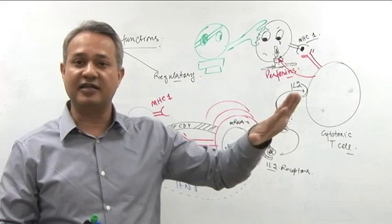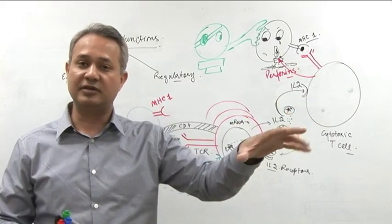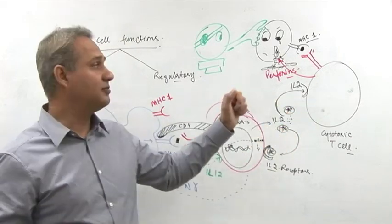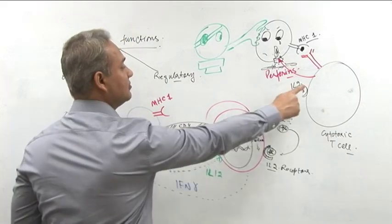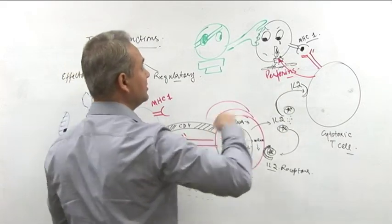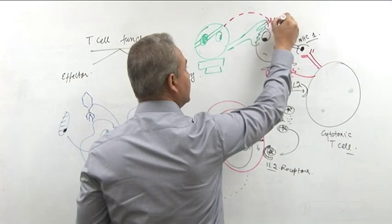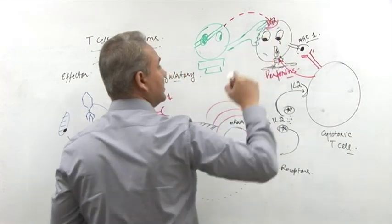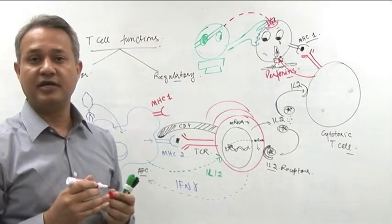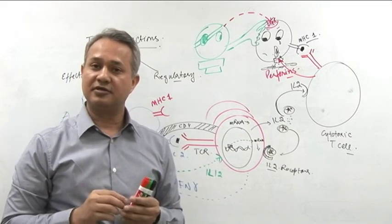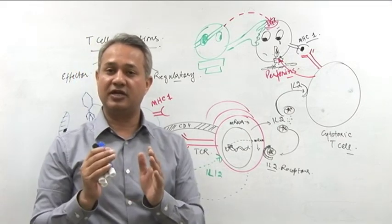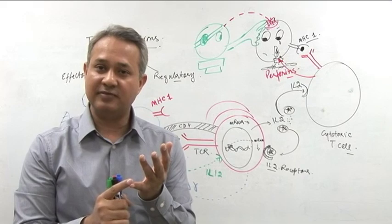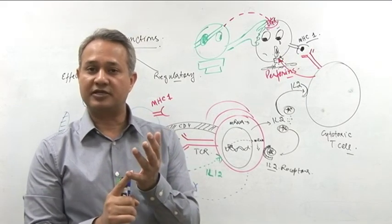So when the MHC1 is reduced, natural killer cell is sitting there and trying to massage and saying, Oh, do you got MHC1? And if the MHC1 is not present, what it does is, it does the same thing. It is going to release perforins. Perforins would create holes in the cell and that cell will be lysed. Why is this important? Here is the thing. Please don't forget this. This is important for USMLE and this is important for your practice.